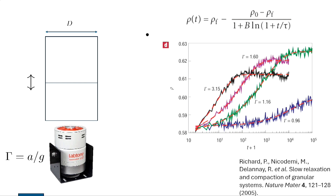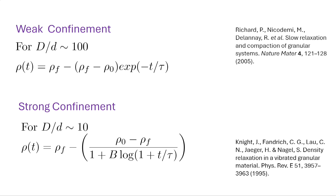There's a controversy about how compaction happens. Some people find that compaction follows a logarithmic law while others find it follows an exponential. I think it basically depends on whether you have weak or strong confinement. If D, the container dimension, divided by d, the particle dimension, is around 100, people usually see exponential behavior; if it's around 10, they see logarithmic. For polydispersed systems you get a beta parameter and it's a bit messier.